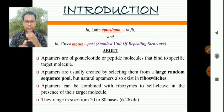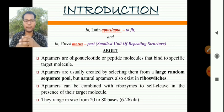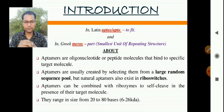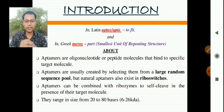Aptamers are usually created by selecting them from a large random sequence pool, but natural aptamers also exist in riboswitches. Aptamers can be combined with ribozymes to self-cleave in the presence of their target molecule. They range in size from 20 to 80 bases.